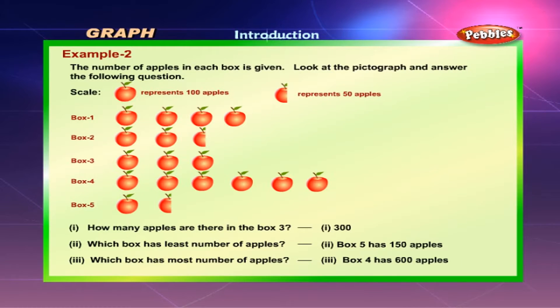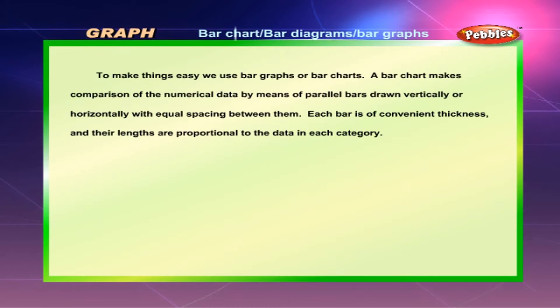Example 2: The number of apples in each box is given. Look at the pictograph and answer the following questions. How many apples are there in box 3? The answer is 300. Which box has the least number of apples? Box 5 has 150 apples. Which box has the most number of apples? Box 4 has 600 apples.